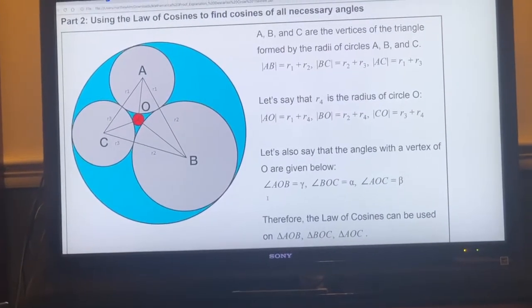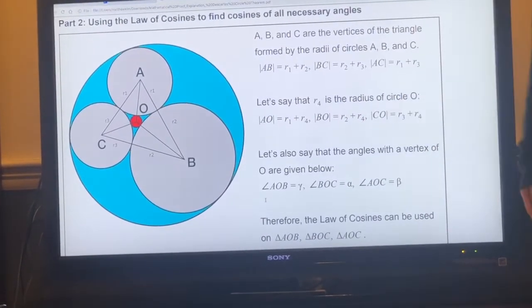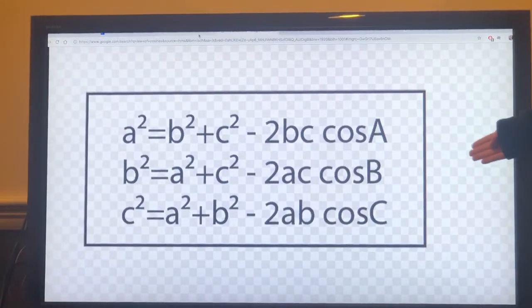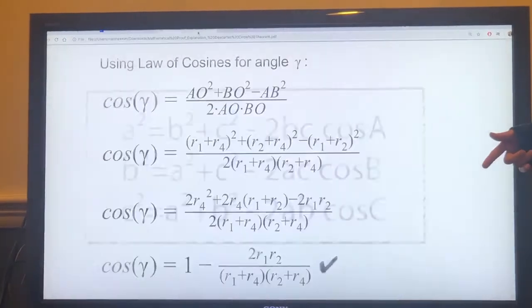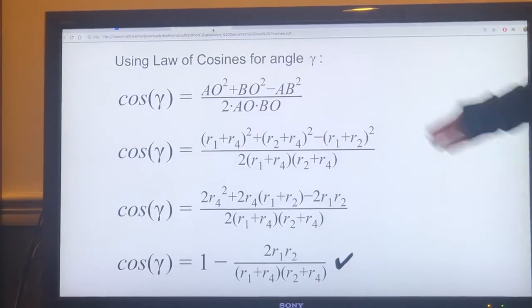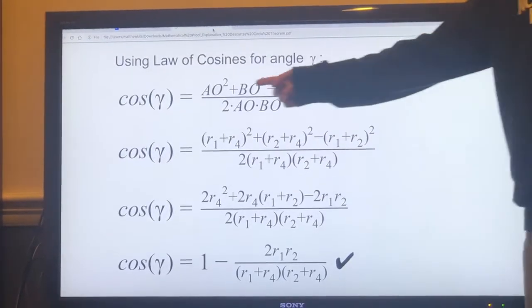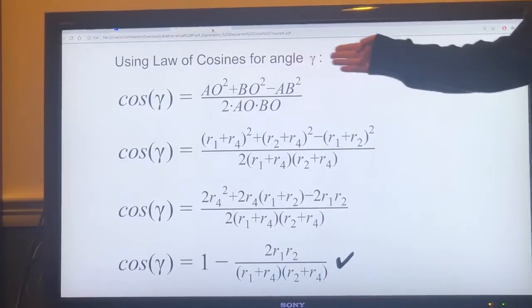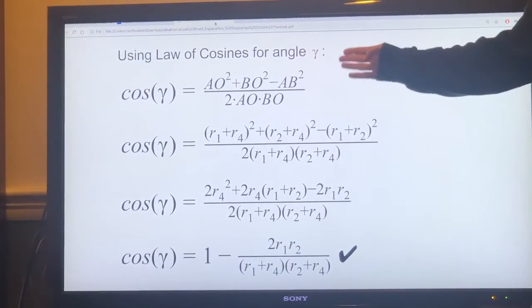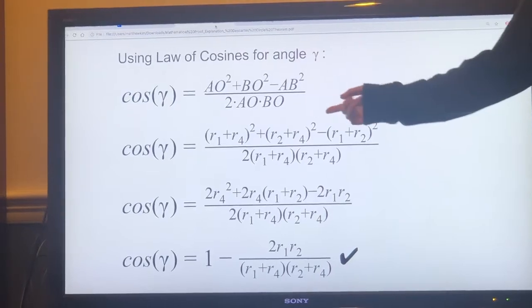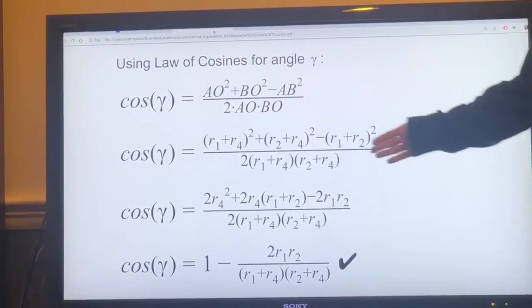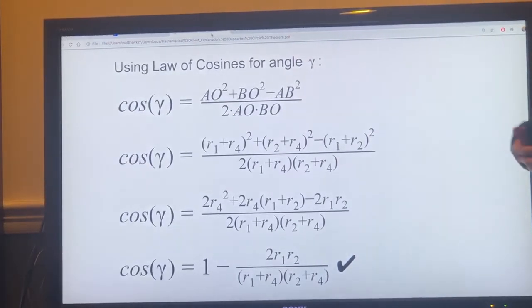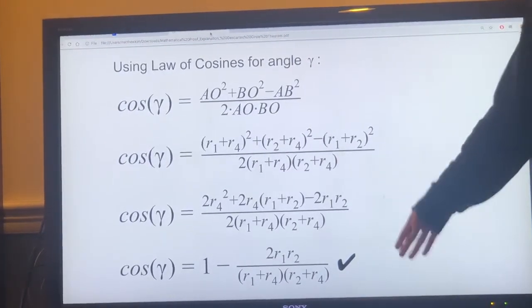Therefore, we can use the law of cosines on the different angles of the triangle. Just to recall, this is a simplified version of the law of cosines. And if we go back to Descartes' theorem, it's the same thing. It's just that instead of A, B, and C, A and O, B and O, and A, B are just lines. So if we do the law of cosines for angle γ, this is what occurs. If you just simplify by simply plugging in the different radii that make up each line, you get this equation, and then just adding everything together, you get this equation, and then finally this equation on the bottom.